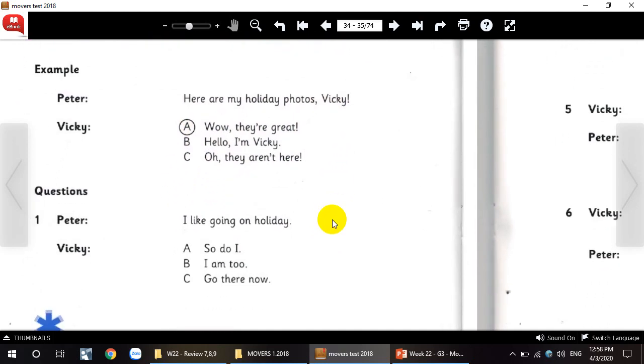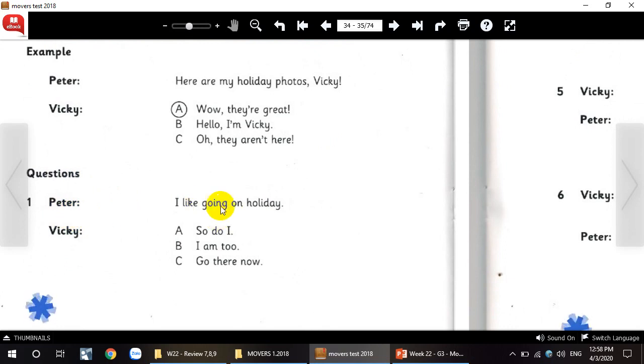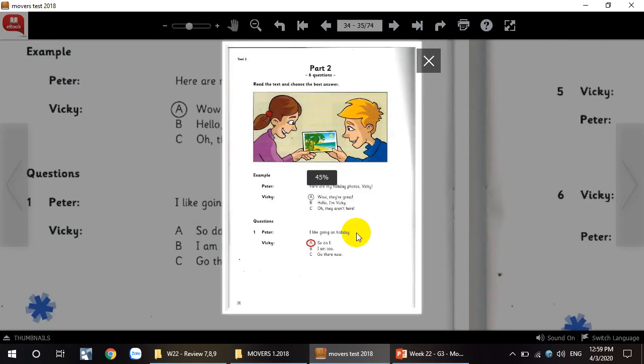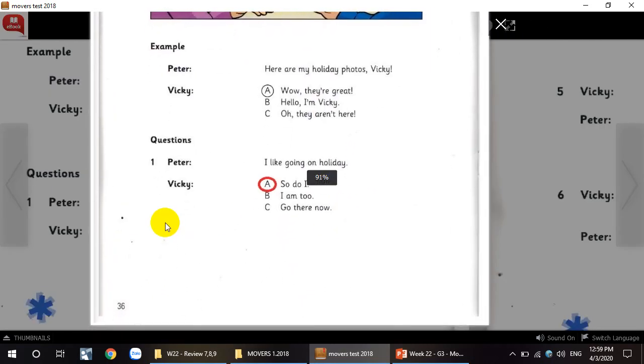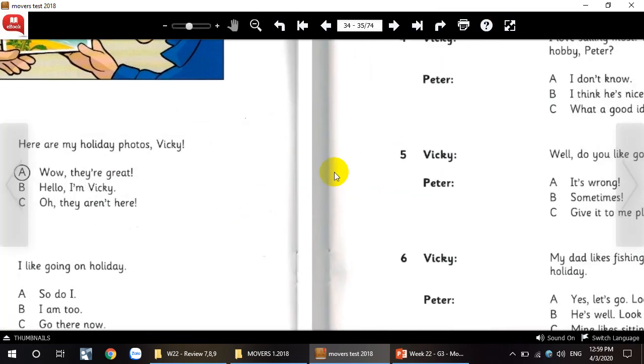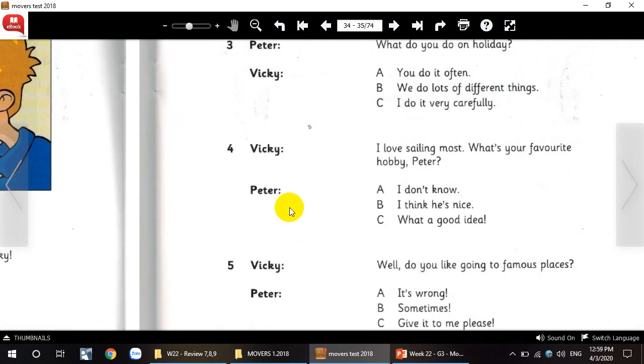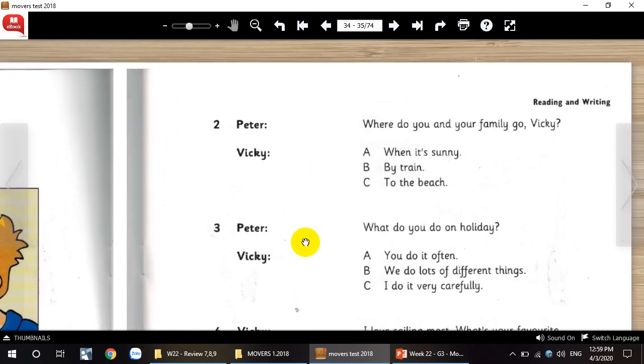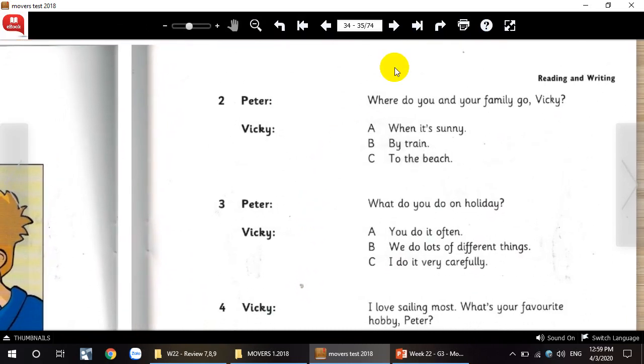And the other questions. Look at question number one. Peter, I like going on holiday. Vicky, A: so do I. B: I'm too. C: go there now. Look here. Yes, the answer is A. And next question. The other questions, please do it at home. Let's move on to the next part.